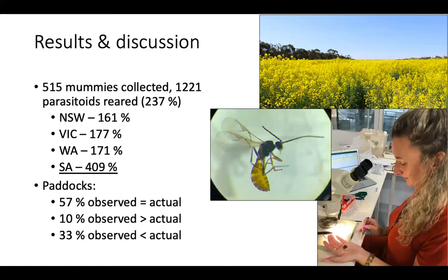At a paddock level, around 57% of sampled paddocks had an observed parasitism rate that equated to the actual rate, suggesting observed rates give a generally good overview on a paddock level. That said, around 10% of paddocks had a greater observed rate than actual, and around a third had a lower observed rate than actual.